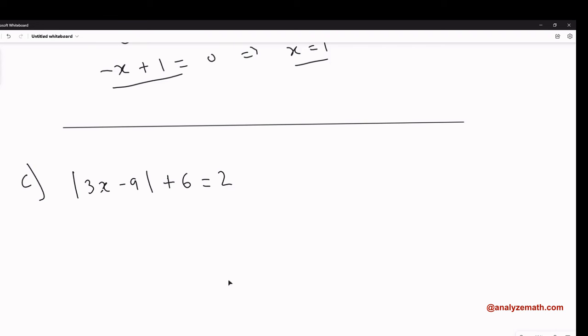Let's go to part C. We isolate the absolute value by subtracting 6 from both sides. This gives us |3x - 9| = -4.